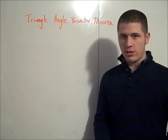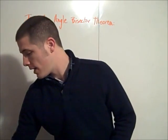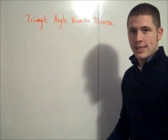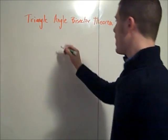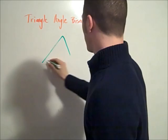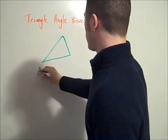This will be a proof of the triangle angle bisector theorem. Now what the triangle angle bisector theorem says is that if you have a triangle, I'll just call this triangle ABC.